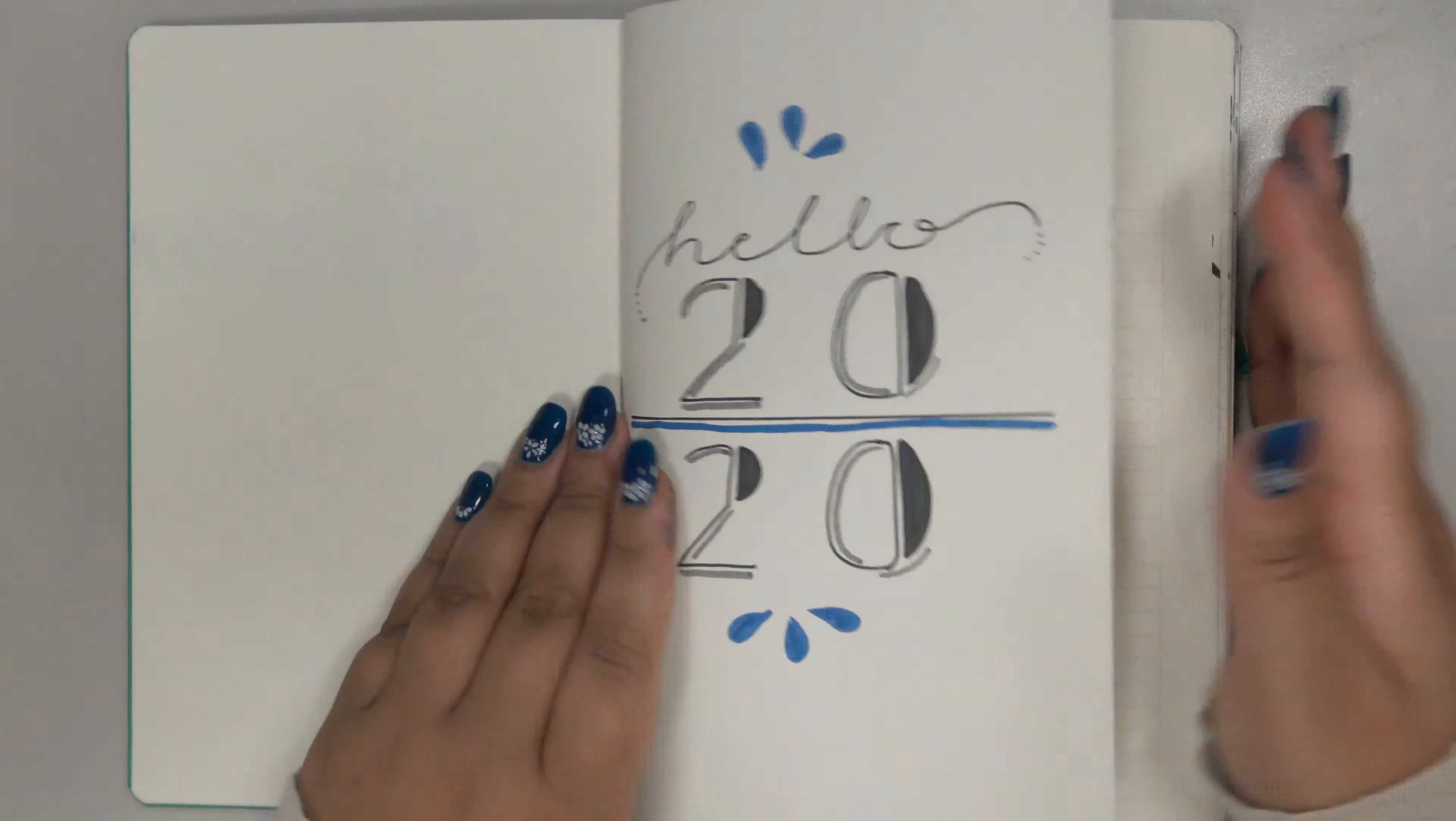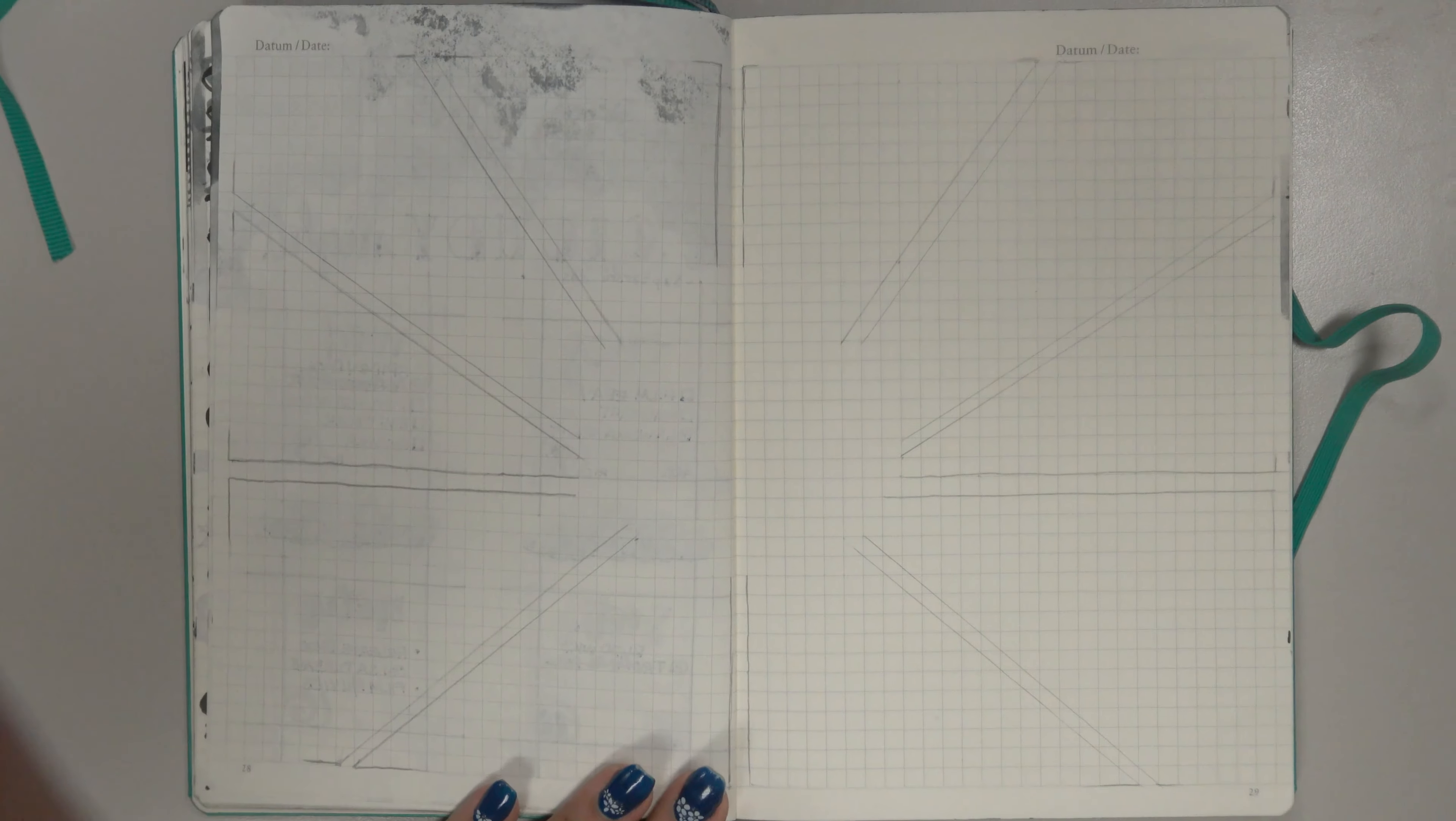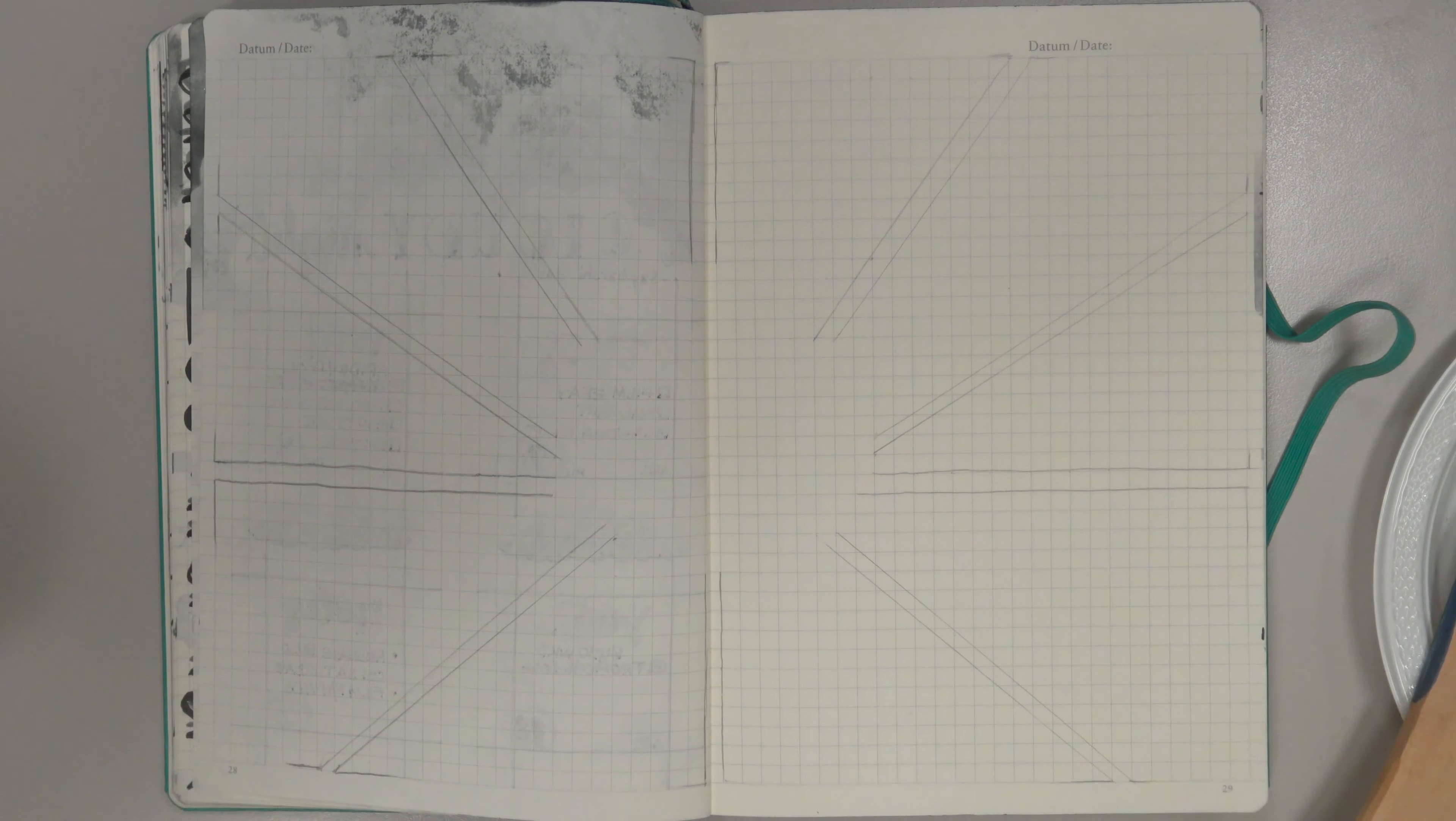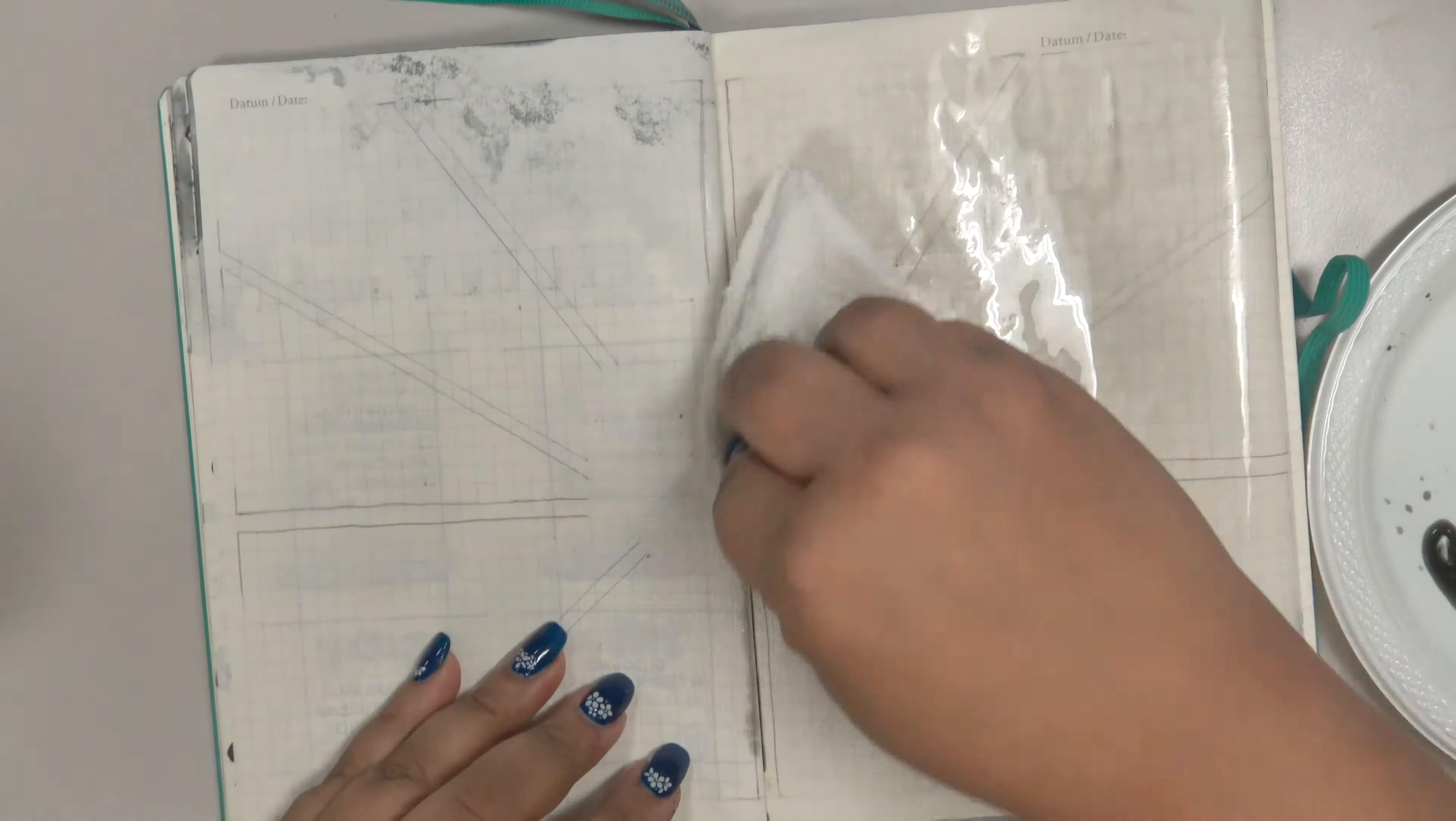For January week three, I started by lightly dividing the two pages into five even sections each. Taking some watered-down ivory black watercolor paint, I used my two-inch hockey brush to cover the pages with an even coat of watercolor, one page at a time.